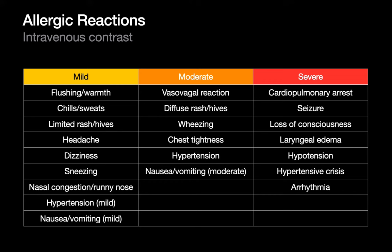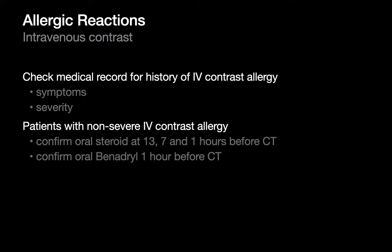Be familiar with adverse outcomes of IV contrast: the two main ones are allergic reactions and acute renal failure. Severe reactions — including cardiopulmonary arrest, seizure, loss of consciousness, laryngeal edema, hypotension, hypertensive crisis, and arrhythmia — tend to be absolute contraindications for future IV contrast administration, even with premedication. When planning IV contrast, review the medical record for prior allergic reactions including symptoms and severity. In patients with a history of non-severe IV contrast allergy, a common prep is three doses of oral steroid at 13, 7, and 1 hour before the scan, plus Benadryl one hour before.